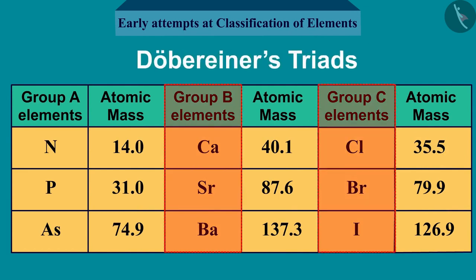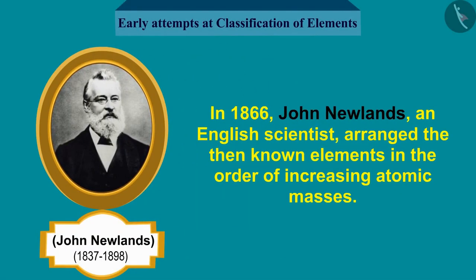Now let's discuss why Döbereiner's classification was not accepted widely. Döbereiner could identify only three triads from the elements known at that time. Hence, this system of classification into triads was not found to be useful.